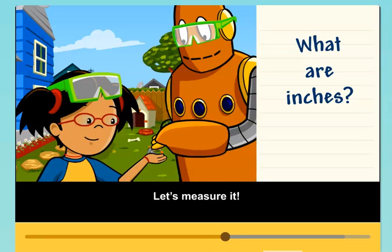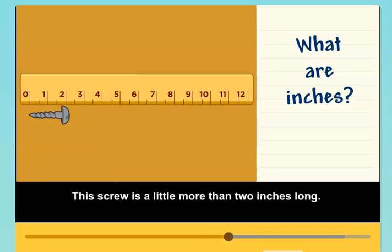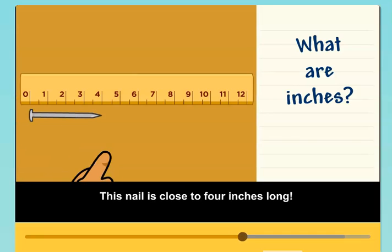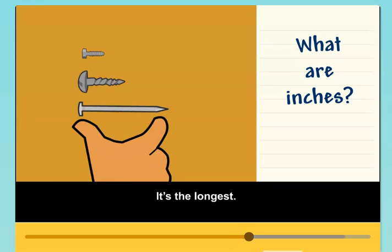Let's measure it. This screw is a little more than two inches long. It's longer than the bolt. This nail is close to four inches long. It's the longest.